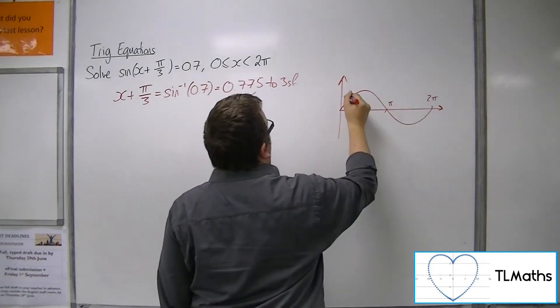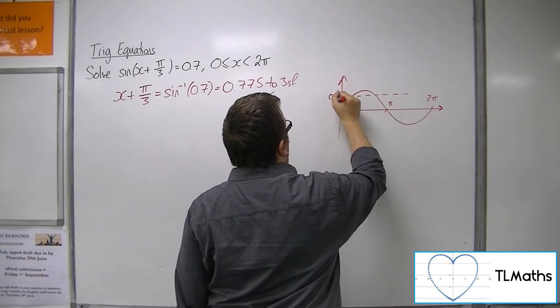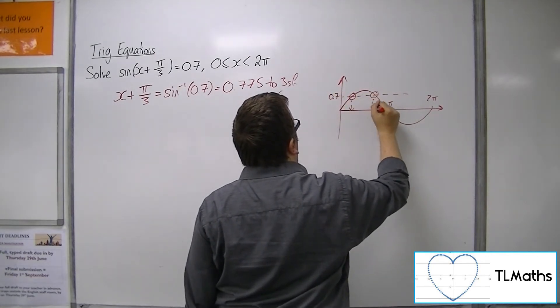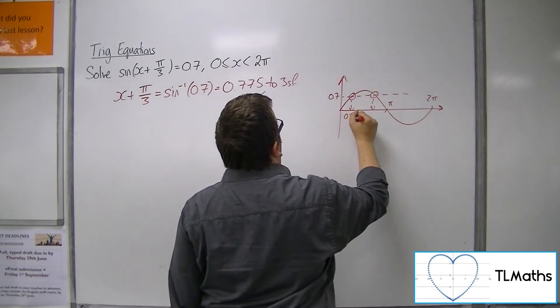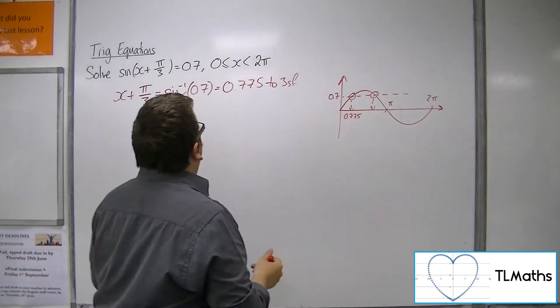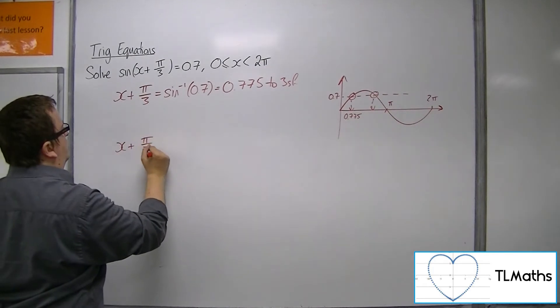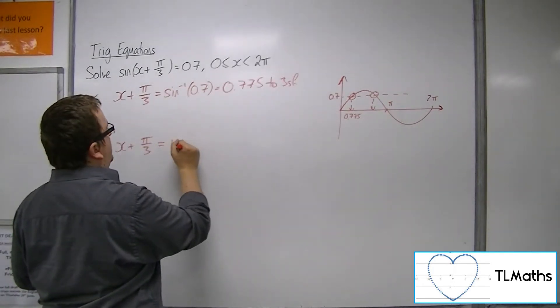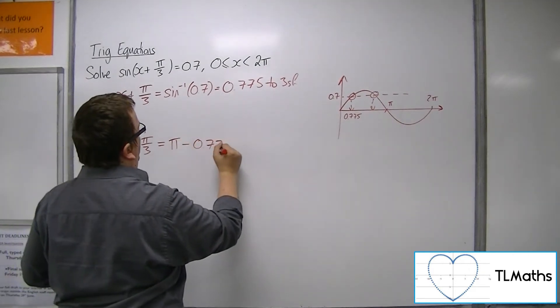So 0.7, we're expecting two solutions. We've got one, 0.775. The second one is found by subtracting 0.775 from π.